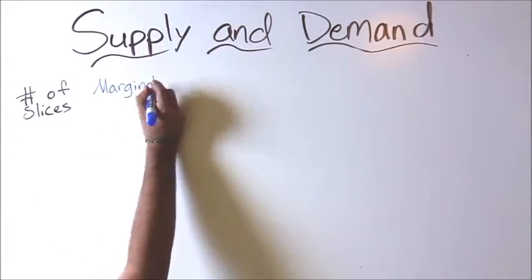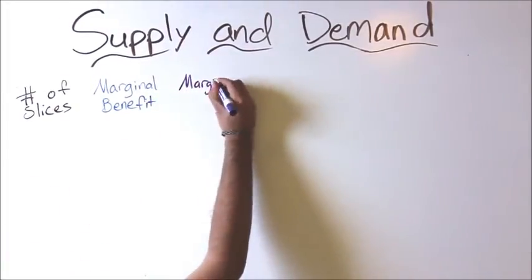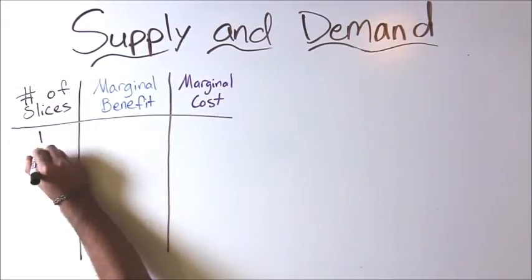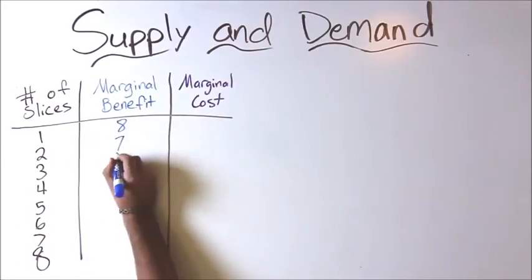We can compare marginal benefit to marginal cost to define market equilibrium. First, we'll take a minute to define and explain supply and demand. Our demand curve is the relationship between price and quantity demanded, where marginal benefit is equal to price for a given quantity demanded.